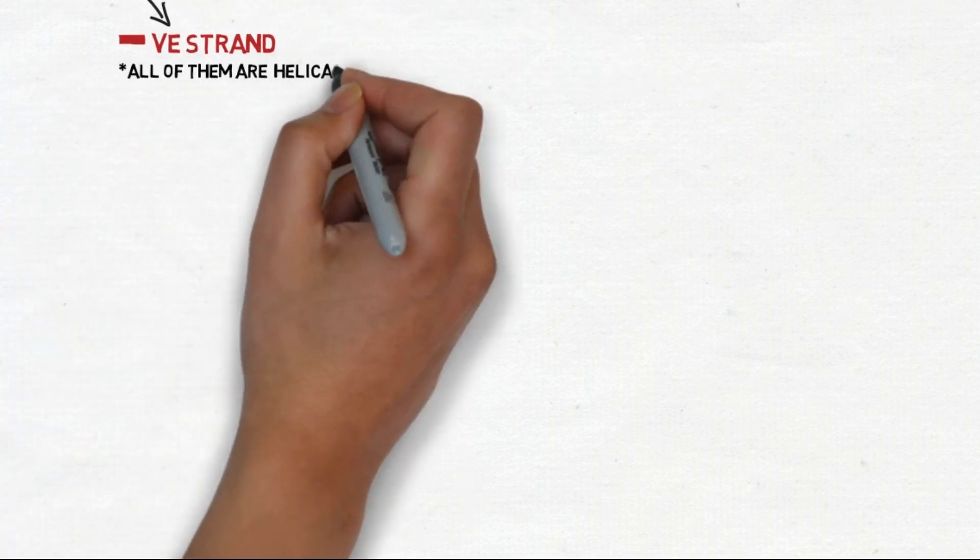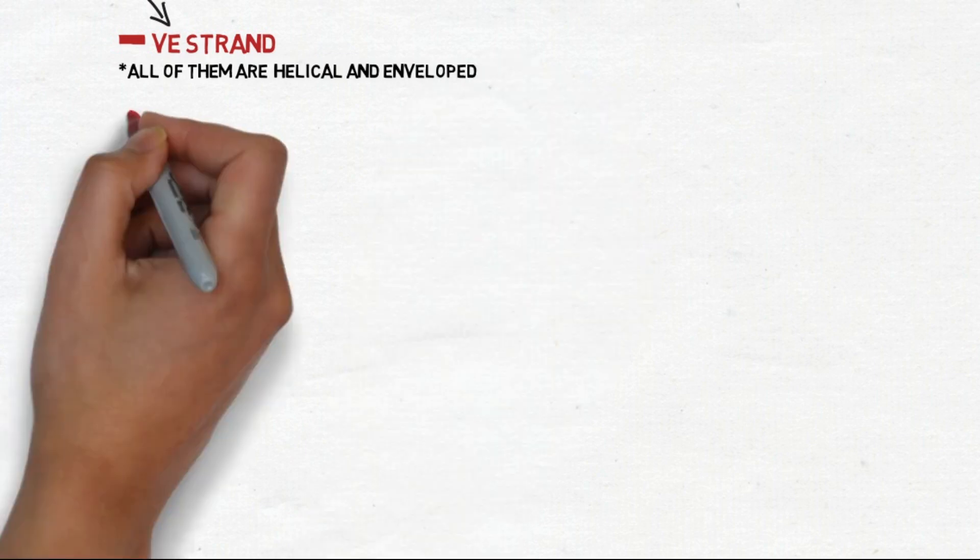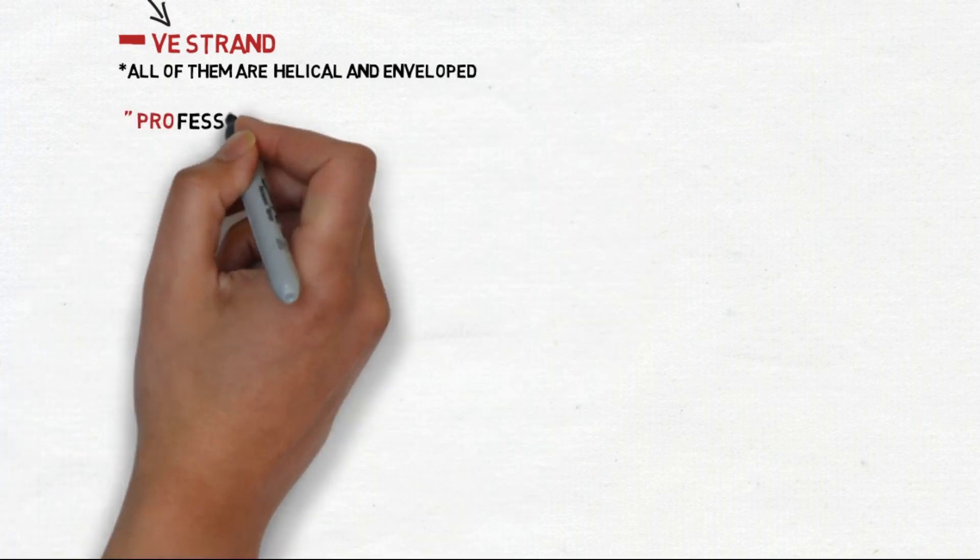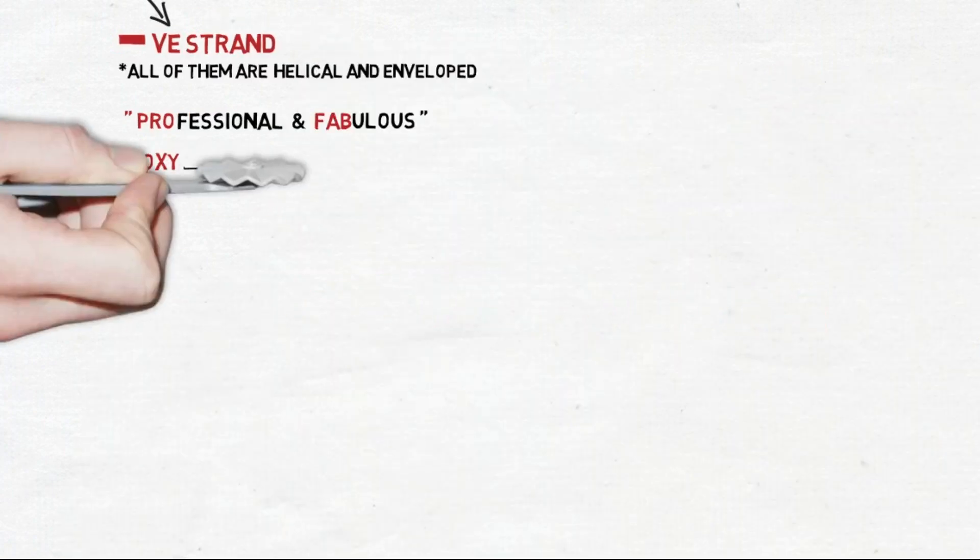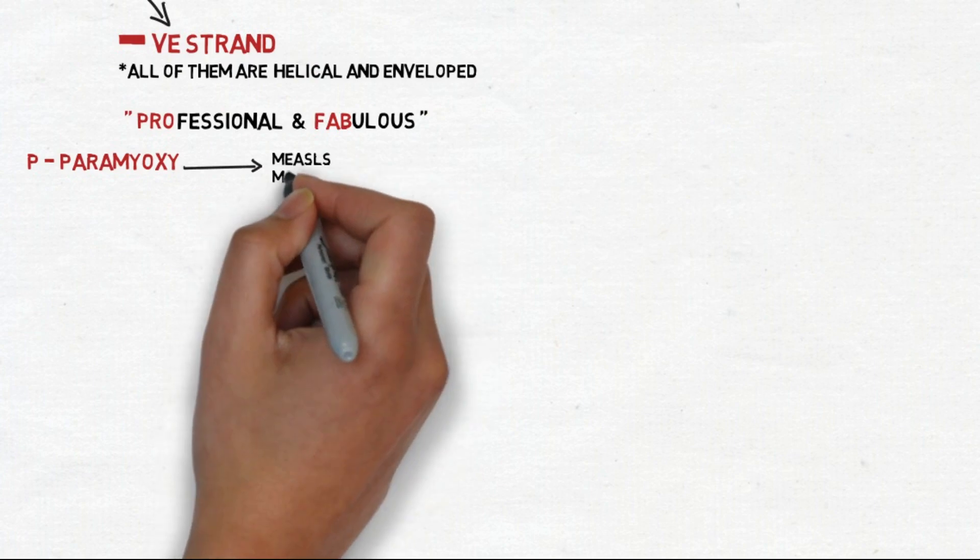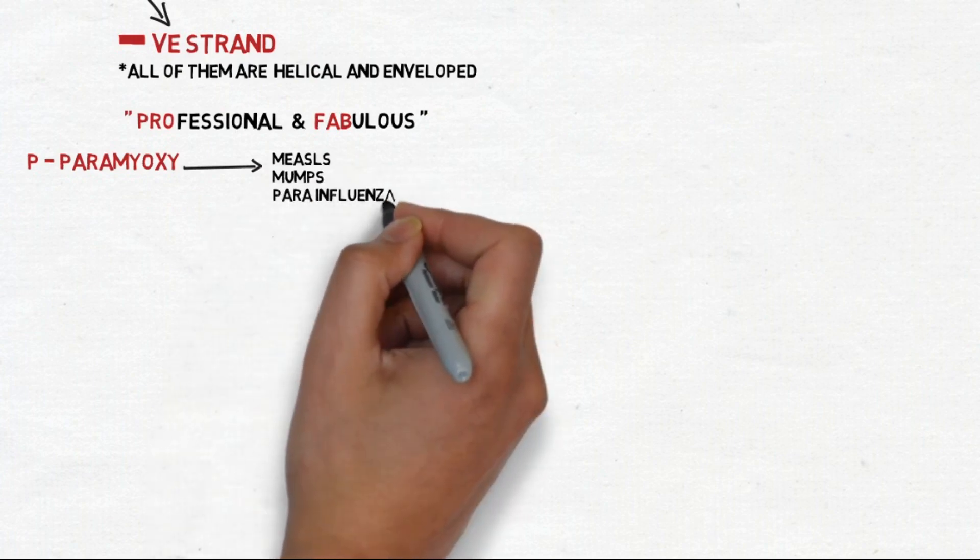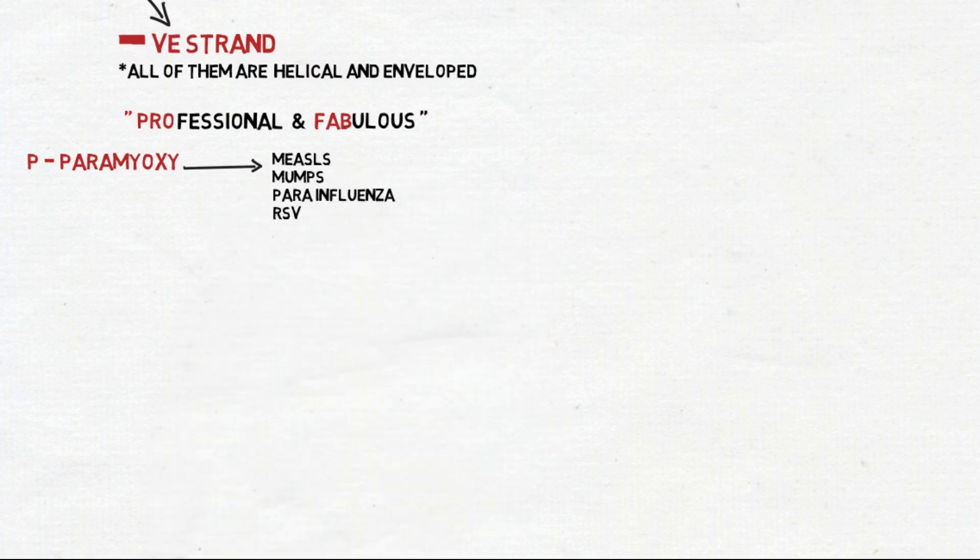Moving to the negative single-stranded RNA viruses, all of them are helical and enveloped. The mnemonic suggested is ROFAB or Professional and Fabulous. P stands for Paramyxovirus, which includes measles, mumps, parainfluenza, and RSV or respiratory syncytial virus.